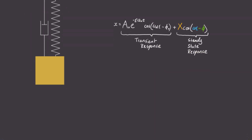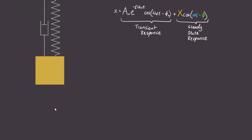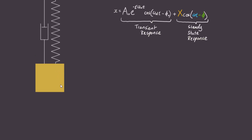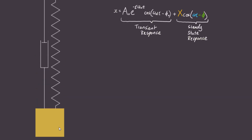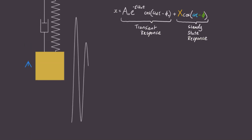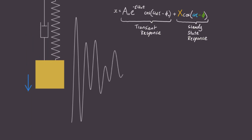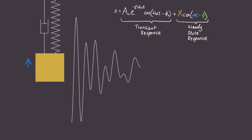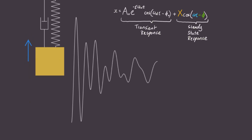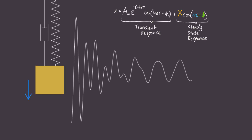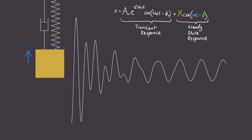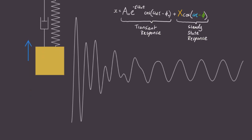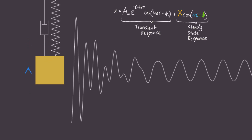But what does this equation really mean? Let's make a simulation. Once I start my simulation, notice how it looks kind of crazy at first. But later, as time goes on, it smooths out, and we get a nice, neat cosine wave.